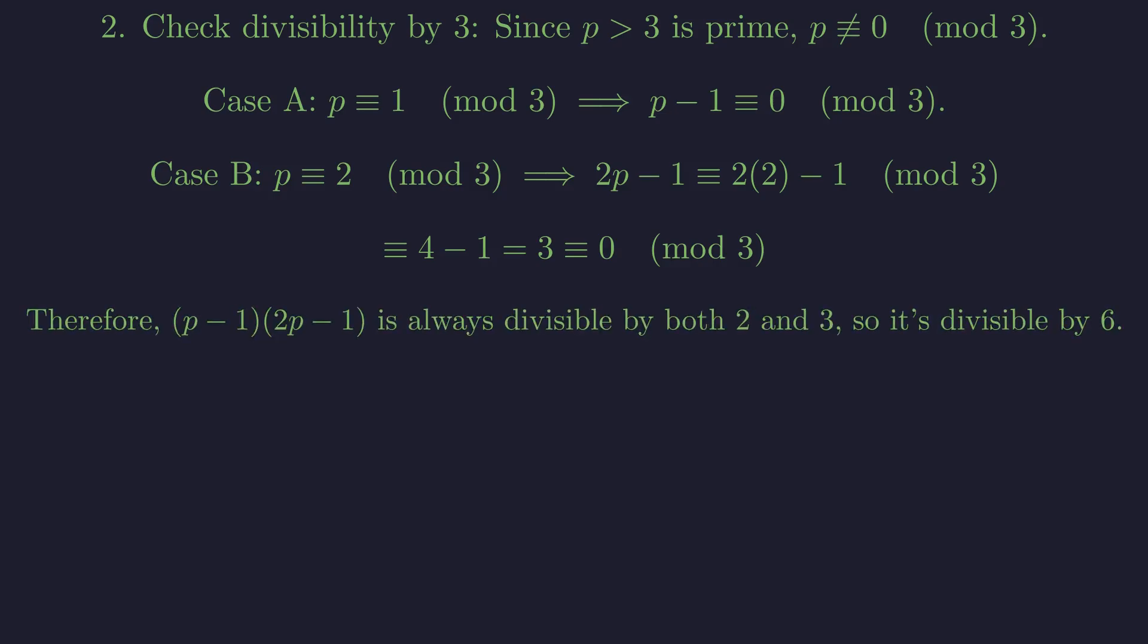In both cases, the numerator is divisible by both 2 and 3, which means it's divisible by their least common multiple, 6. This is true for any prime p greater than 3.